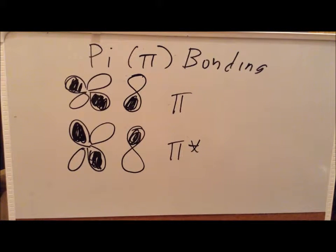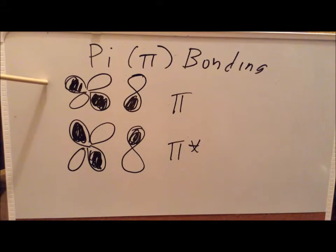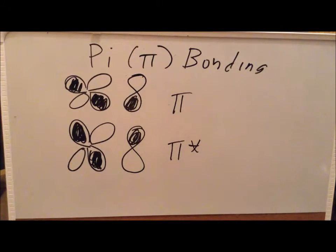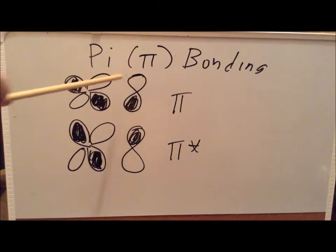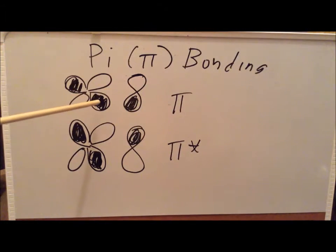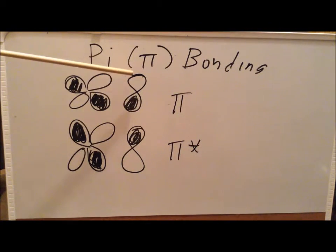We can also have pi interactions between d-orbitals and p-orbitals. These are going to become very important in transition metal complexes. The d-orbital will generally be dxy, dxz, or dyz, interacting with a p-orbital on one of the ligands. Where these orbitals have the same phase at the top and the same phase at the bottom, we get a pi bonding interaction.